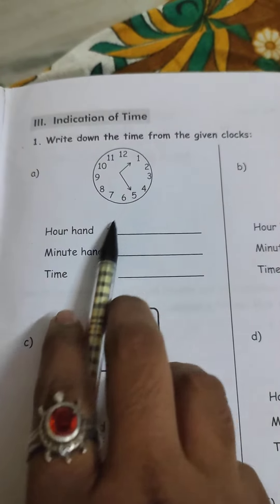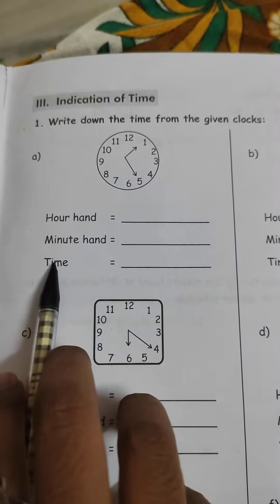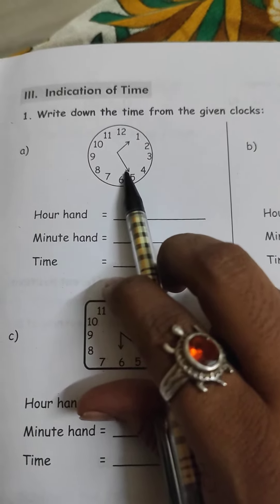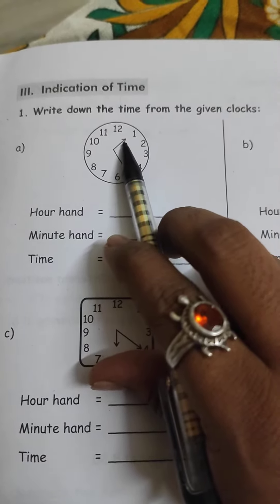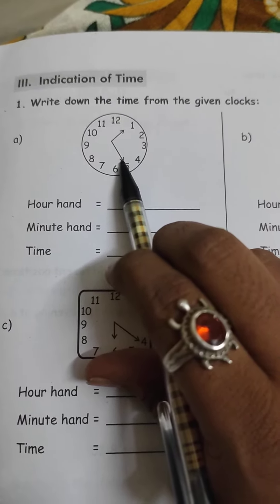You have to see the given hour hand, minute hand, and time. Here, the short hand and the minute hand are shown. The short hand indicates the hours and the long hand indicates the minutes.